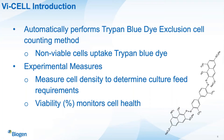Vi-CELLs are used to count cells using the Trypan blue dye exclusion cell counting method. Non-viable cells uptake this blue dye, and from there you can perform a series of experimental measures. Two of the most common measures used to guide business decisions are: measuring cell density, so that you can monitor your cell culture feed requirements over a 14-day time period, and measuring the cell viability percentage, which allows you to monitor your cell culture health.